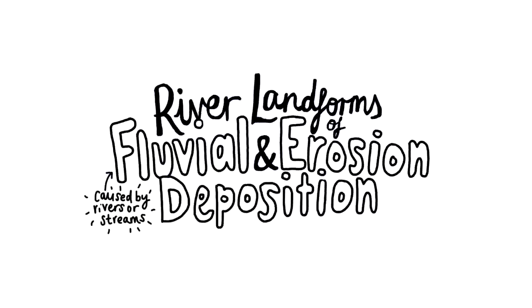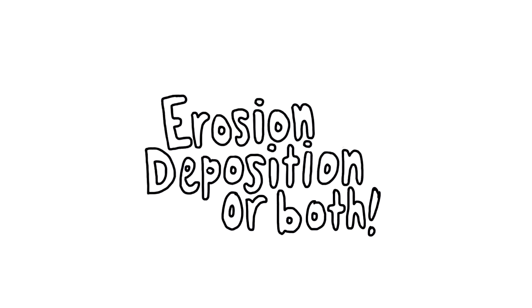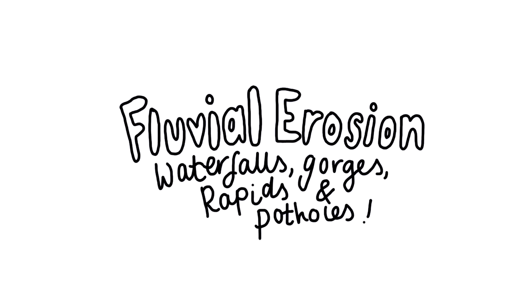Some river landforms are created as a result of erosion, deposition, or both. Some examples of fluvial erosion are as follows.